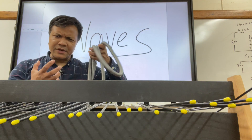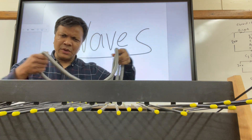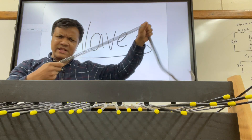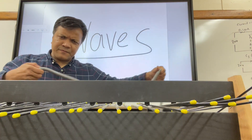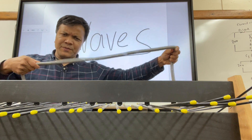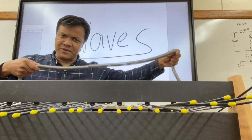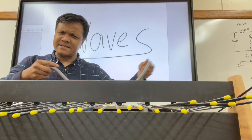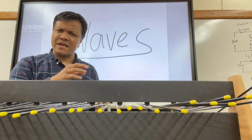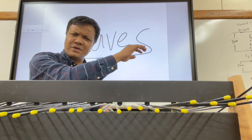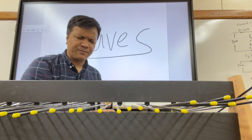How can you create waves? Well, for example, take this slinky. By moving it up and down, you create a wave — meaning a disturbance that carries energy from one location to the other location.